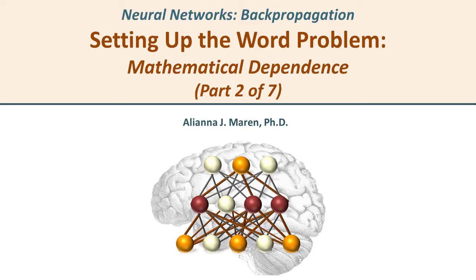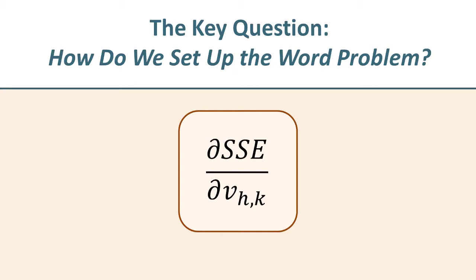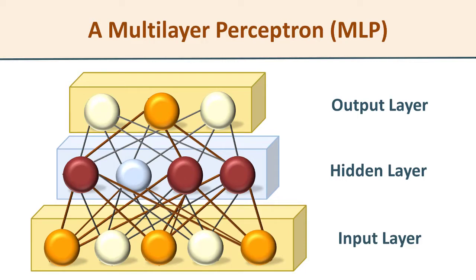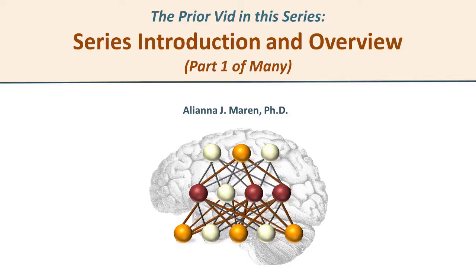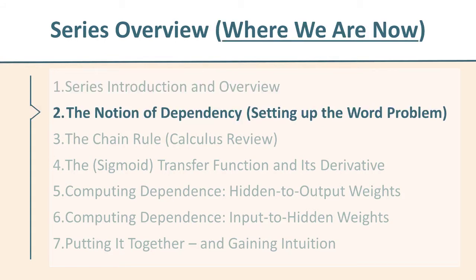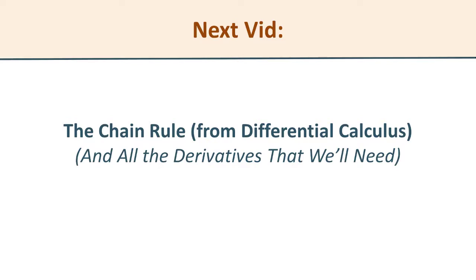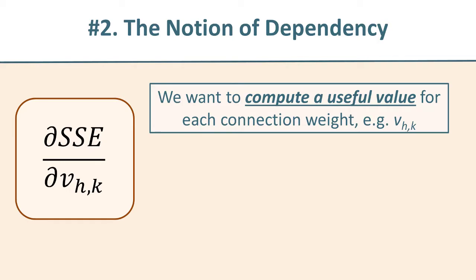You've joined me for the neural networks backpropagation series, and here we are in part two. We're investigating mathematical dependence — in short, how to set up the word problem that is the basis for the backpropagation method. Throughout this video and the entire series, we're going to be addressing a multilayer perceptron: a neural network with a three-layer structure — input, middle, and output layers. In the previous video, we took a look at the series overview and identified that in this video we would be looking at the notion of dependency, or how we set up our word problem.